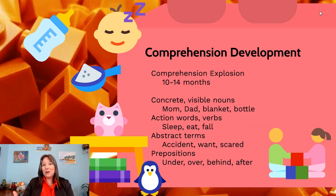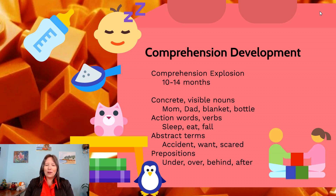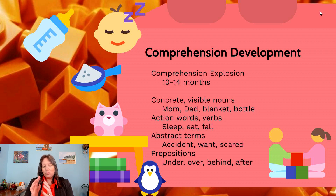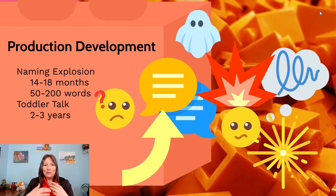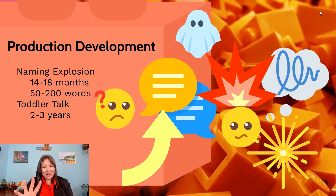The first things we learn are nouns we can see and touch — like bottle, mom, dad, blanket. Then come action words we do regularly: sleep, eat, fall, go. Then more abstract things like want, scared, accident. Finally, prepositions like on, over, under, in front of take us much longer to understand. Comprehension development blooms rapidly and before production, so for quite a few months we understand a lot more than what we can display.